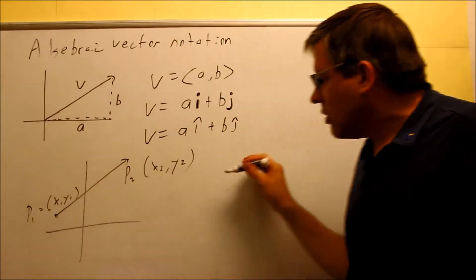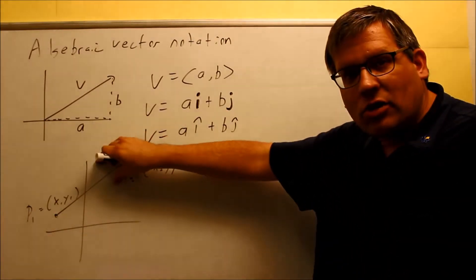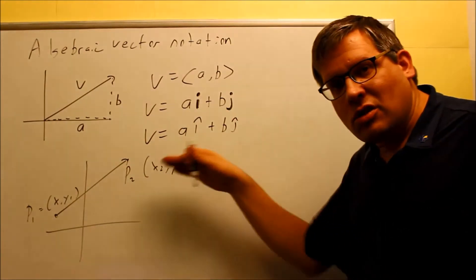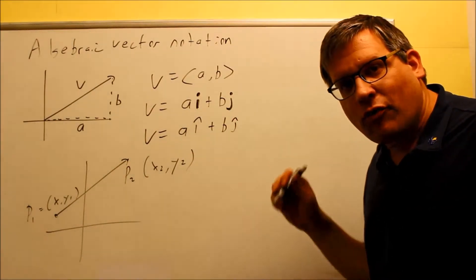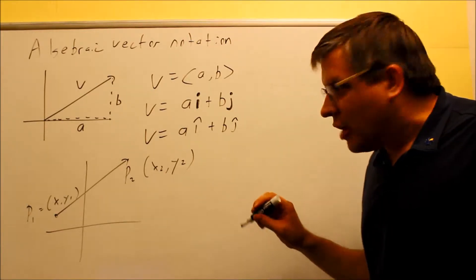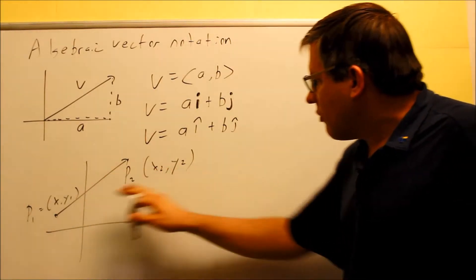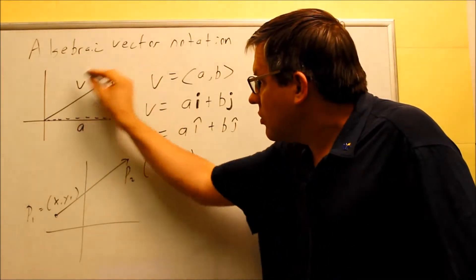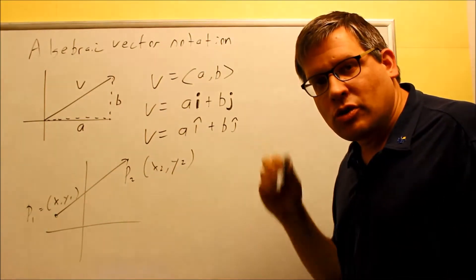So again, we want to turn this into a position vector. And we have a formula that allows us to do that. So if you're given this kind of information, and you want to take it back to a position vector starting from 0,0, there's a formula.